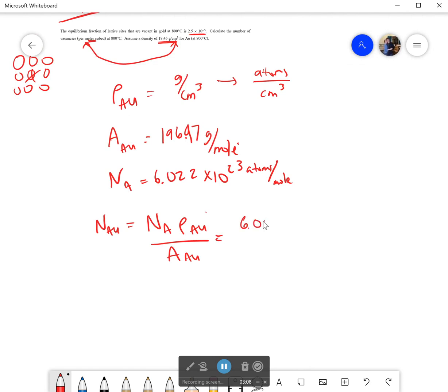So that would be equal to 6.022 times 10 to the 23rd atoms per mole. I'm going to multiply that by 18.45 grams per centimeter cubed, and all of that over 196.97 grams per mole. So if I calculate this properly, then let's see here: moles cancels, that's good, grams cancels, and left with atoms per centimeter cubed.